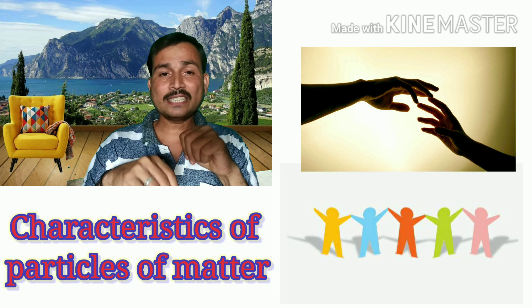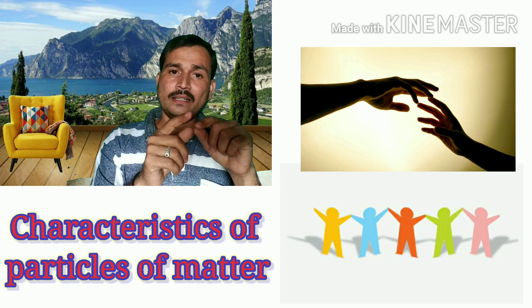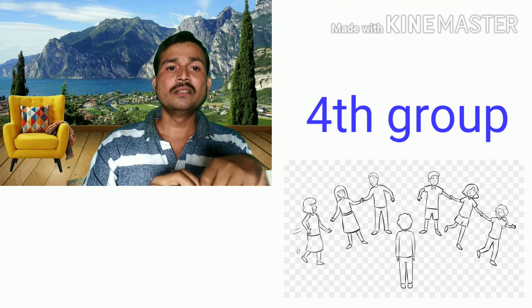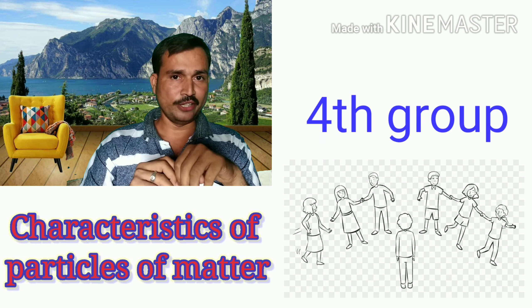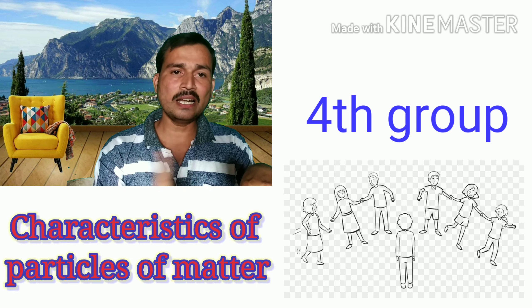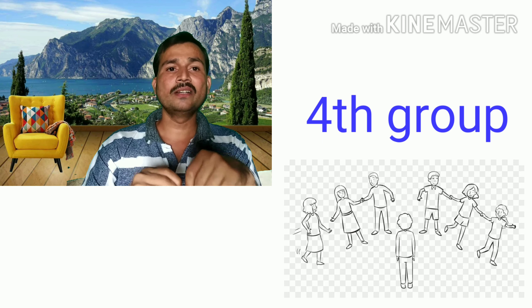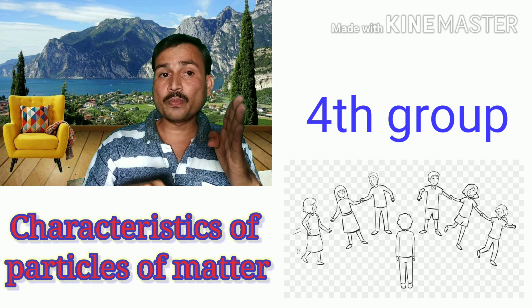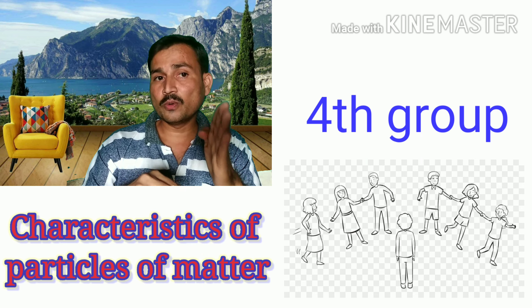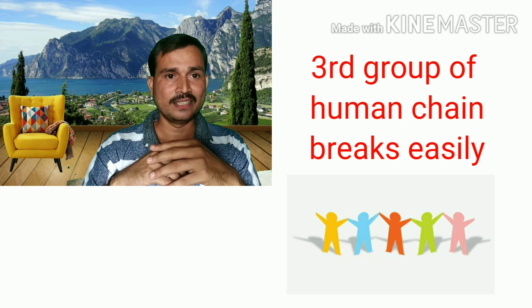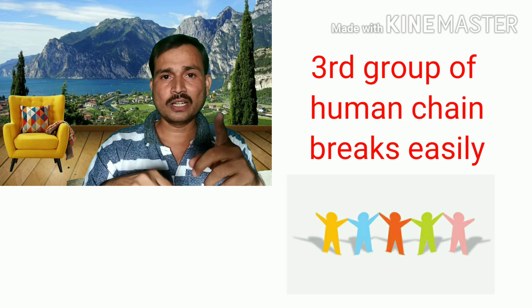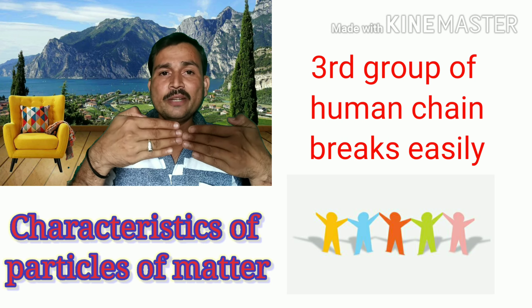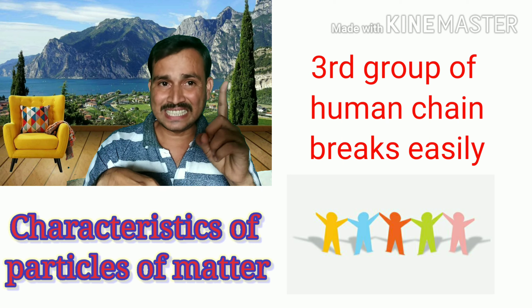So 3 groups are made. The last 4th group: I suggest those students to go and break the 3 chains. Students will run around the 3 groups and you observe the game. The question arises — which group's chain breaks easily? The answer is: the 3rd group of students, who made the bond between the tips of their fingers, is the easiest to break.